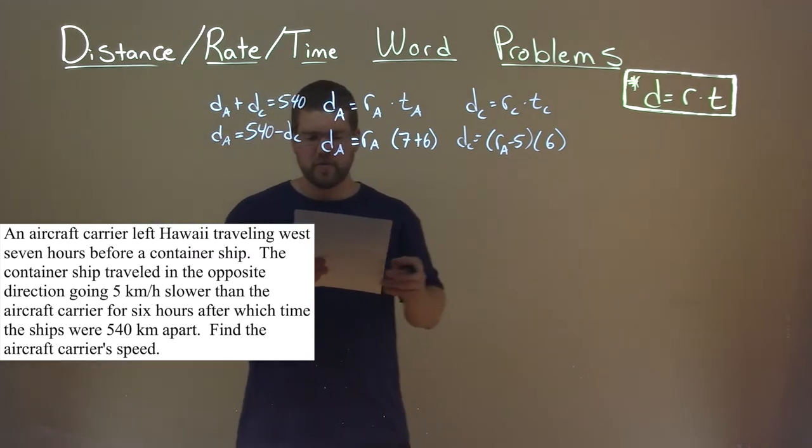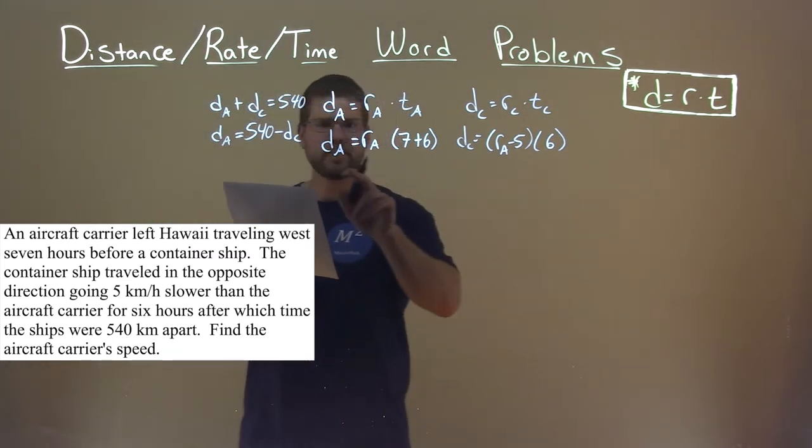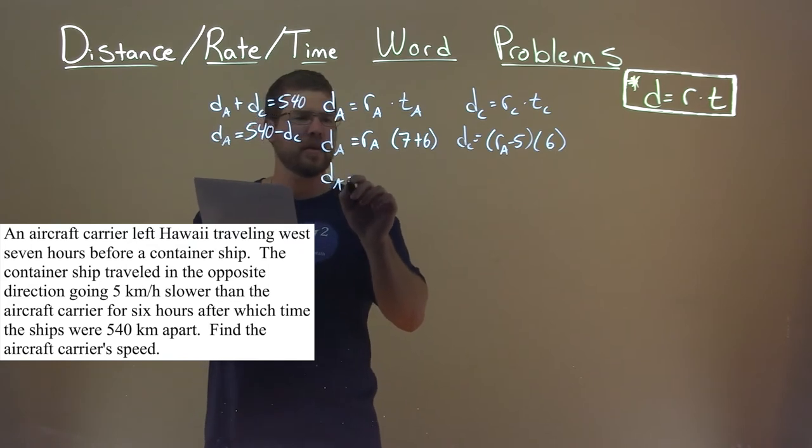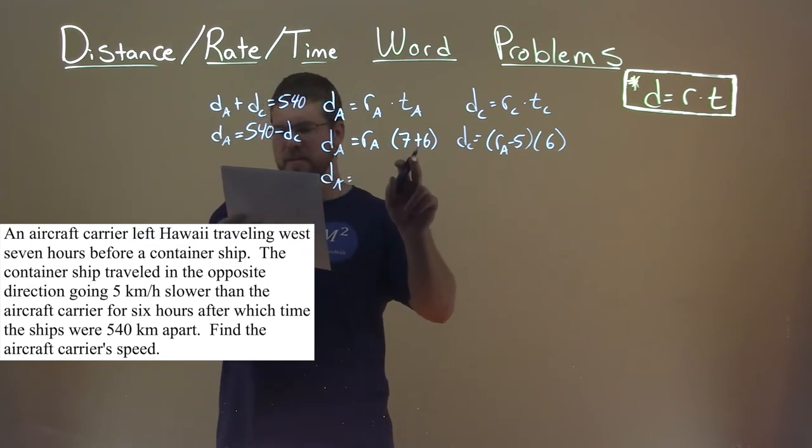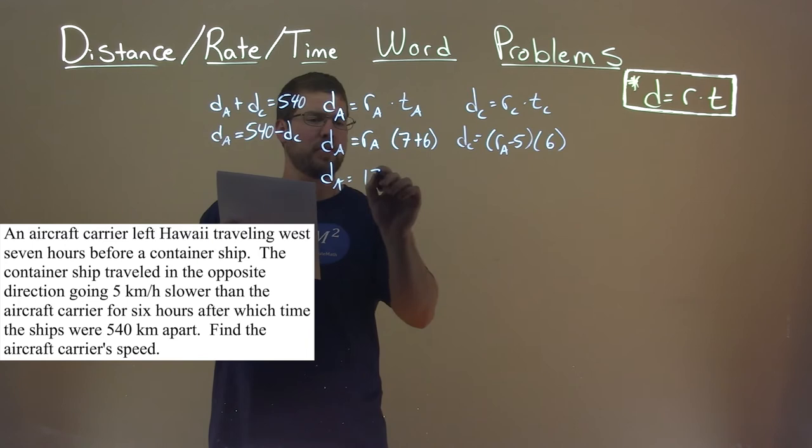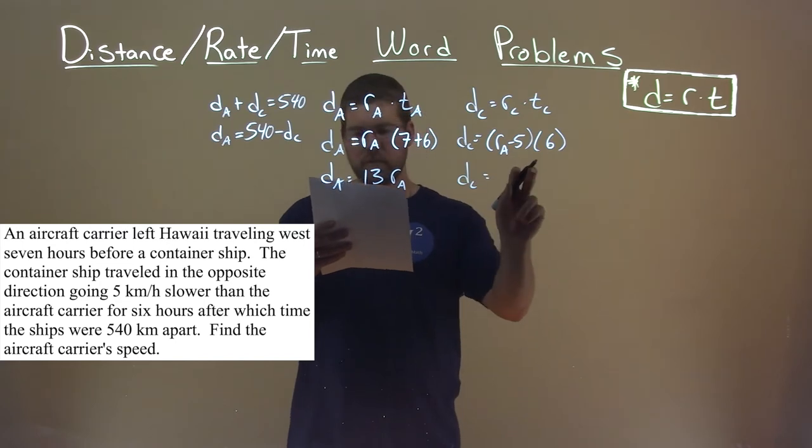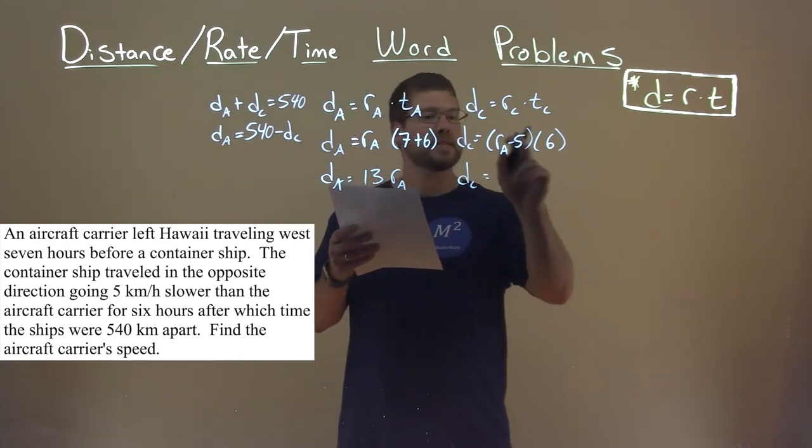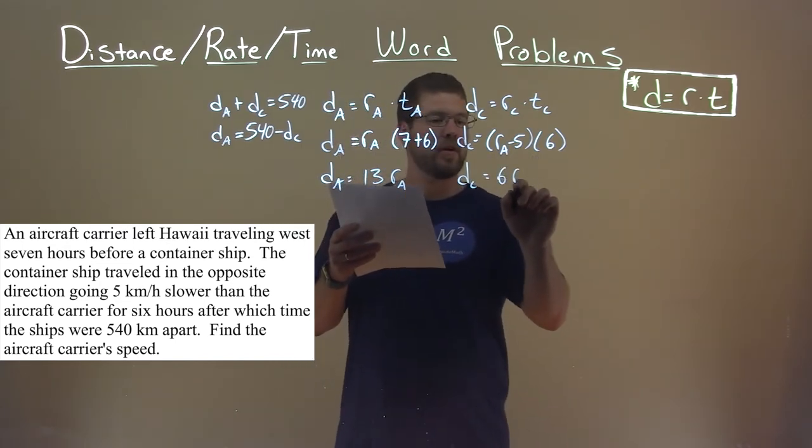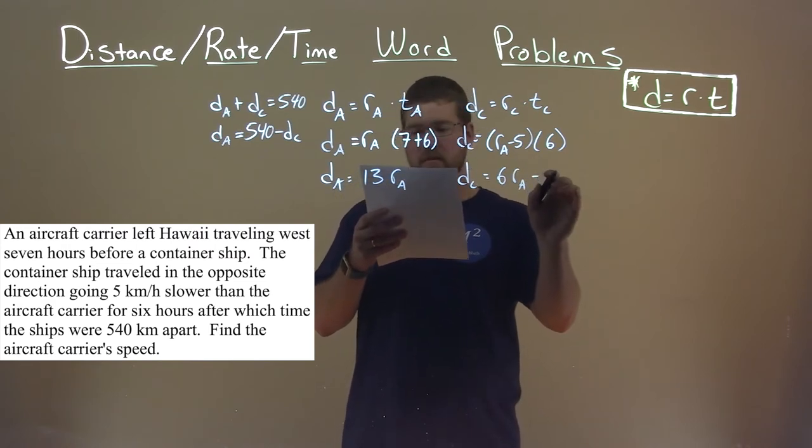So let's simplify these a little bit if we can. D sub A is equal to R of A times seven plus six, which is 13, so let's write 13 R sub A. Same thing with D sub C. Let's distribute that six across. Six times R_A is 6 R sub A, and five times six is 30.